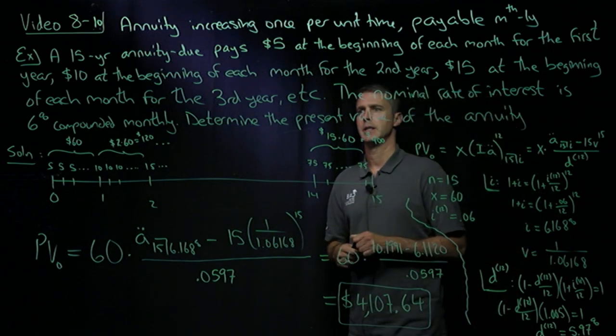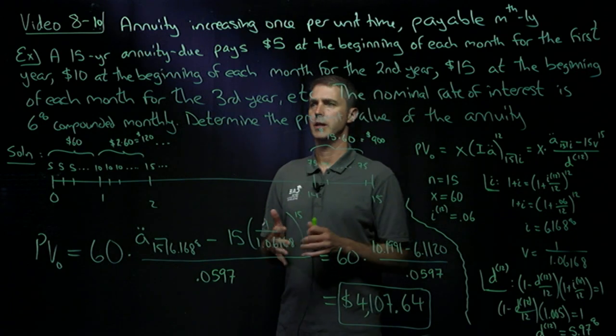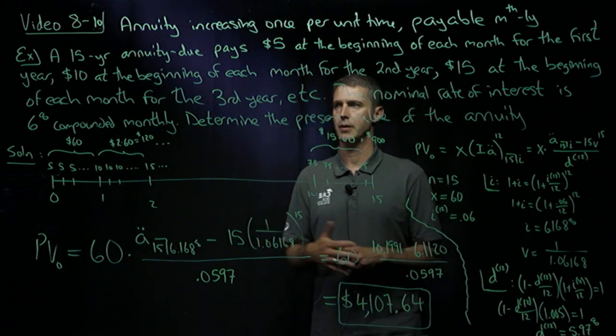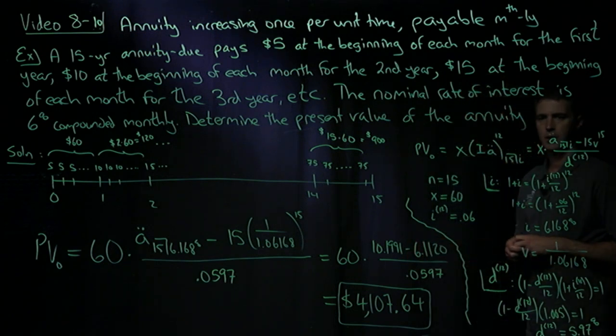In this video, we'll do a basic example of an annuity that increases once per time unit, but is payable m-thly. So I'll step off and let you copy it out.